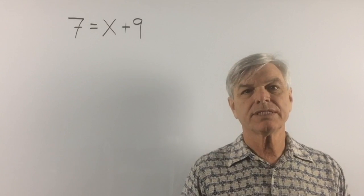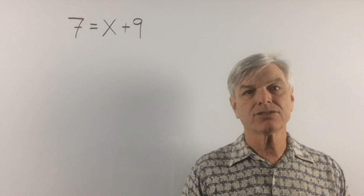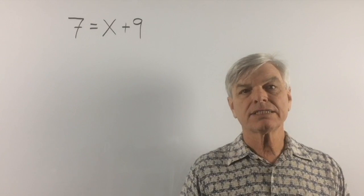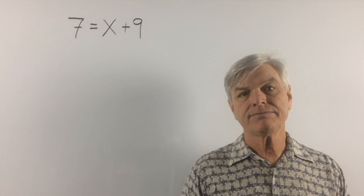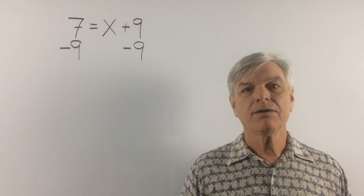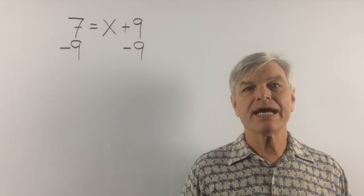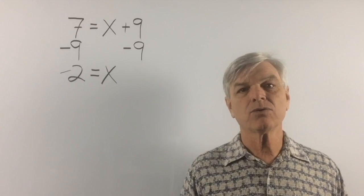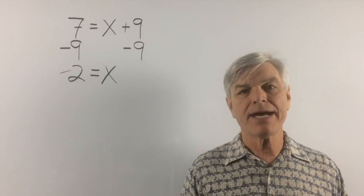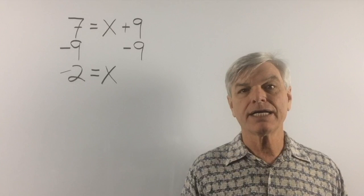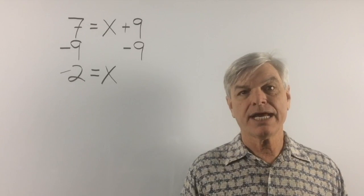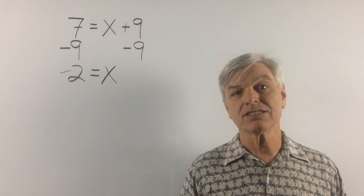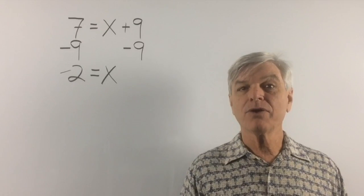Let's try another one. We have 7 plus x equals 9. On the right-hand side, we have x plus 9, so let's get rid of the 9 to get x alone. Add negative 9 to both sides. 9 plus negative 9 is 0, so we leave that blank. Bring down x and the equal sign. 7 minus 9 is negative 2. So negative 2 equals x, or x equals negative 2. It does not matter which side of the equal sign your variable is on.